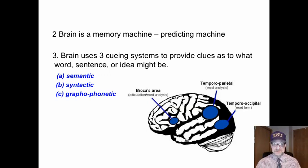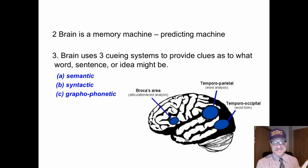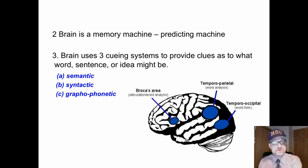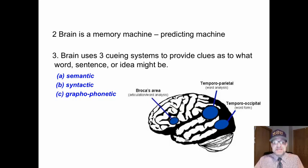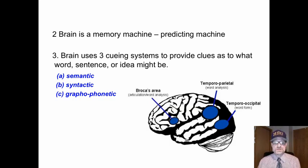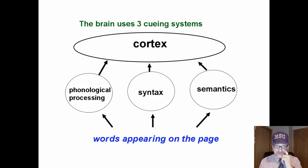The brain uses three cueing systems to provide clues as to what a word, sentence, or idea might be. As you're reading the words right there on the page, you're not processing each individual letter — you are using minimal letter cues. Instead, you are using three cueing systems to recognize words: semantic, syntactic, and graphophonetic cueing systems.